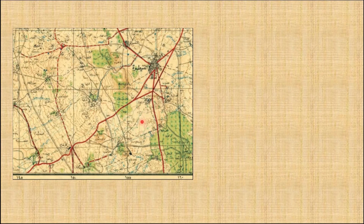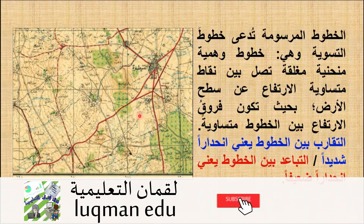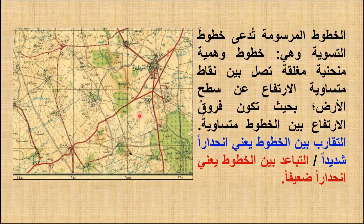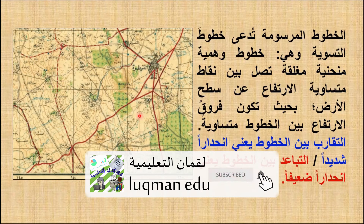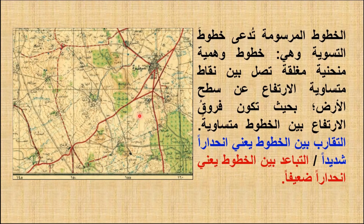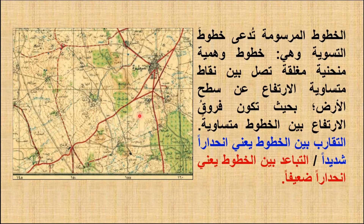أما عندما تتباعد خطوط التسوية فيعني أن سطح الأرض مستوٍ وغير منحدر. الخطوط المرسومة تُدعى خطوط التسوية، وهي بالتعريف خطوط وهمية منحنية مغلقة تصل بين نقاط متساوية الارتفاع عن سطح البحر بحيث تكون فروق الارتفاع بين الخطوط متساوية - مثلاً 20 متر بين كل خط تسوية وآخر. إن تقارب الخطوط يعني انحداراً شديداً أما تباعدها فيعني انحداراً ضعيفاً.